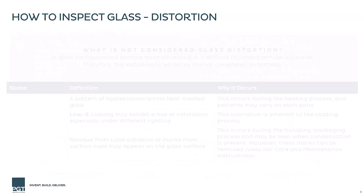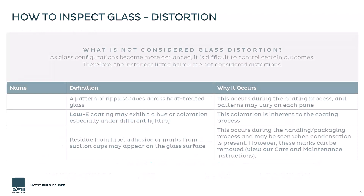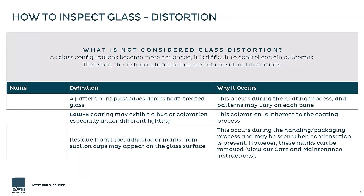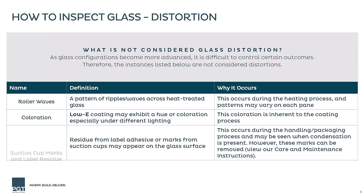Some imperfections in glass are unavoidable. The types you might encounter are roller waves, which are a natural phenomenon from the heat strengthening process; coloration differences, typically seen in glass with a low-e coating when viewed in different lighting; and suction cup marks or label residue, which may become apparent when condensation is present.